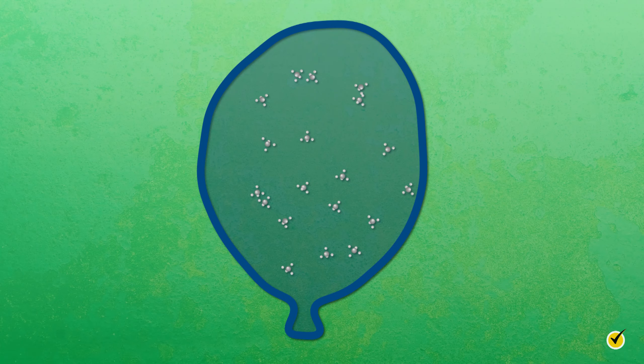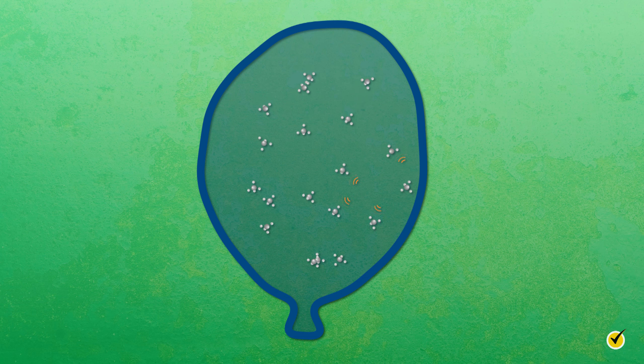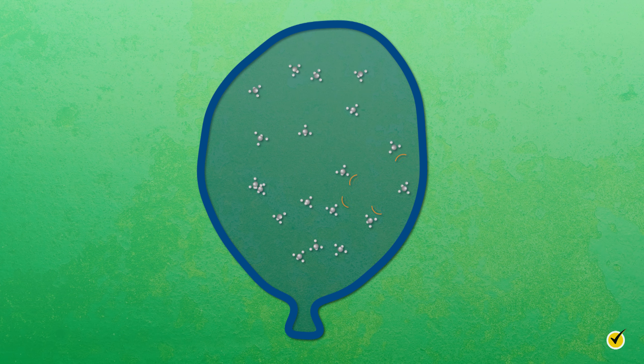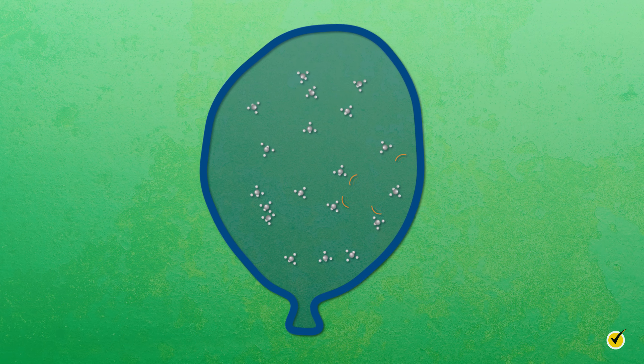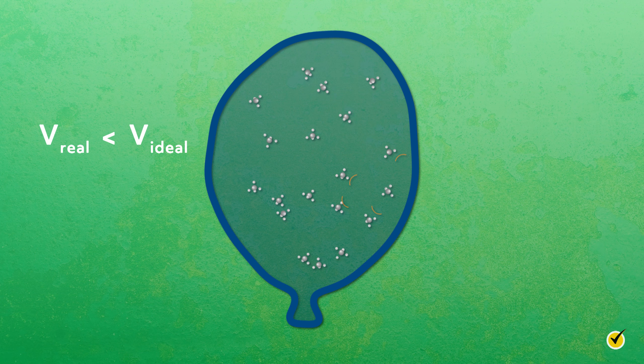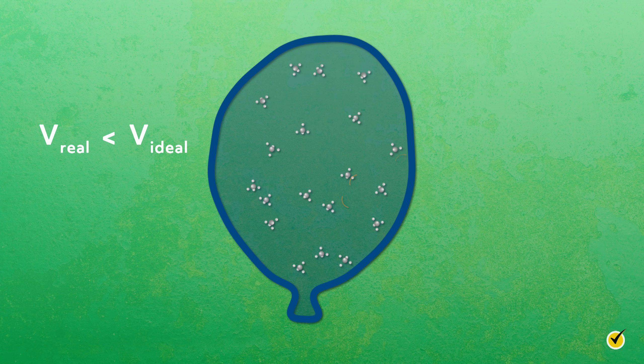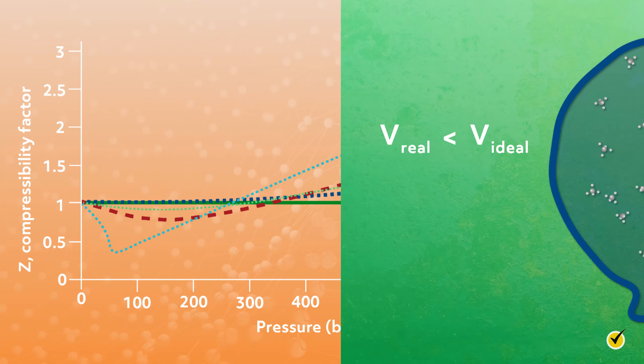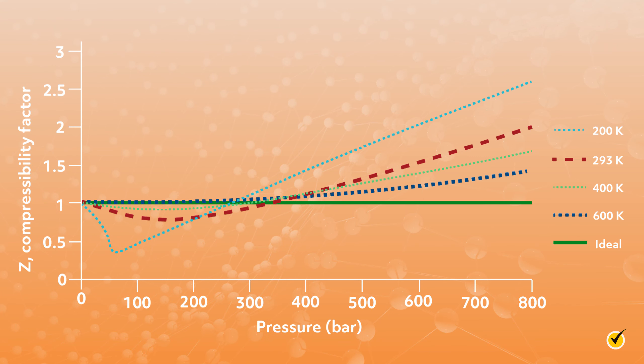If we consider a real gas particle at the edge of the container, it feels a collective pull from the other particles away from the wall, thus decreasing the pressure it exerts on the vessel. In total, this decreases the volume of a real gas in comparison to an ideal gas. This effect depends both on the properties of the gas particles and the temperature of the system.